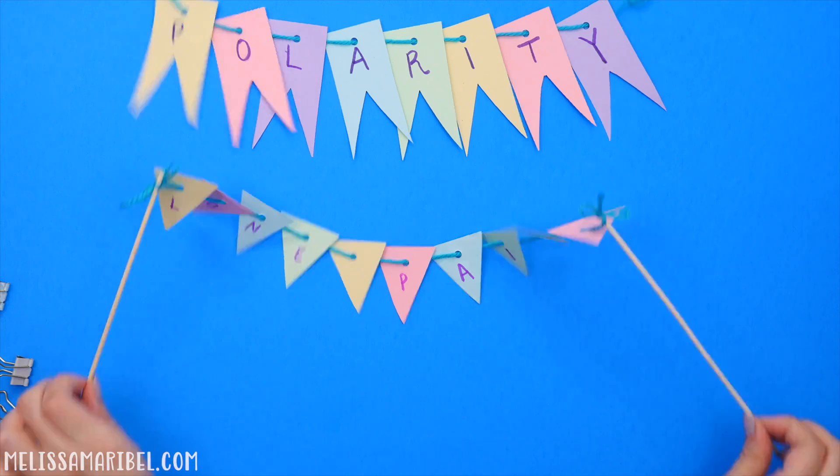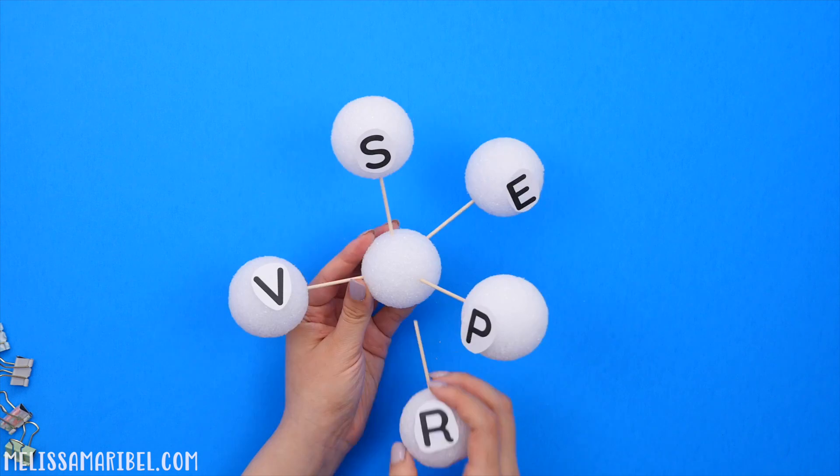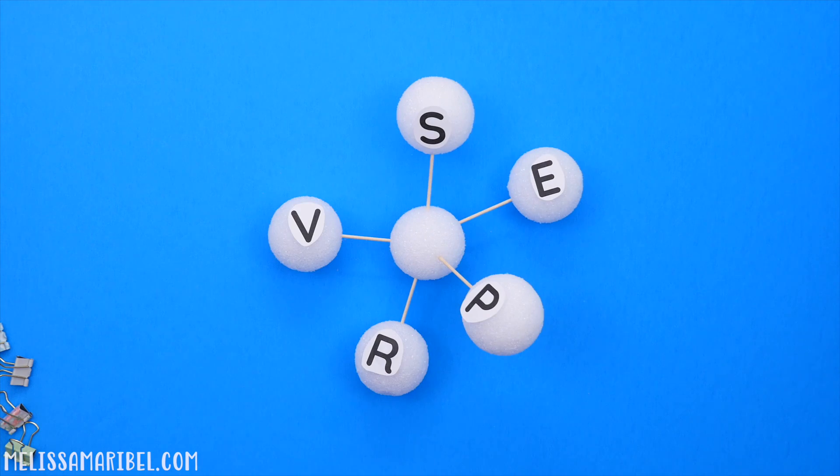On to VSEPR theory. For organic chemistry, it's going to be very important to be able to visualize 2D structures in 3D, which is what VSEPR theory helps us do.